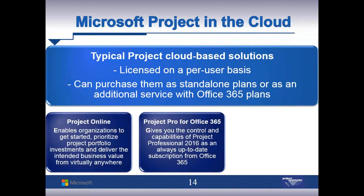Project Pro for Office 365 is project on the desktop that can connect to the server. It comes with a project client access license and is always up to date. As we go forward, we might see those 2016 version names drop off, because if you're in the cloud and a new version comes out, you'll be there automatically — especially with Project Online. That's the advantage of software as a service.